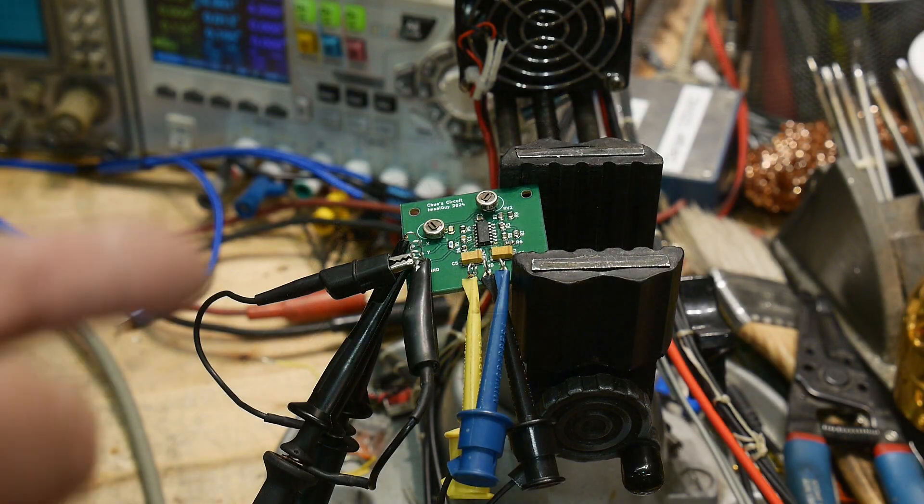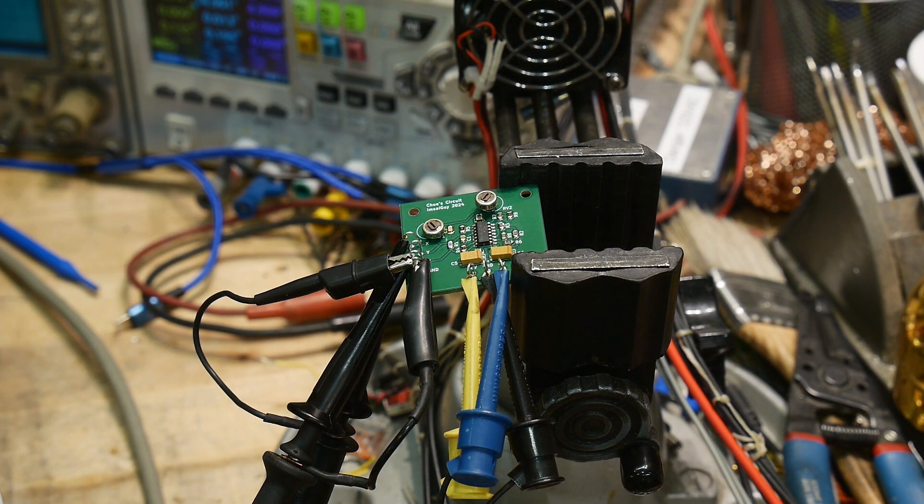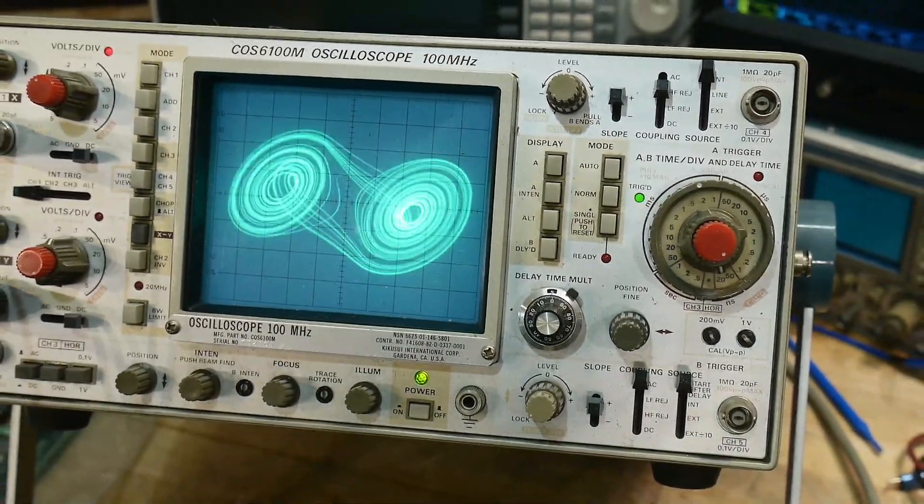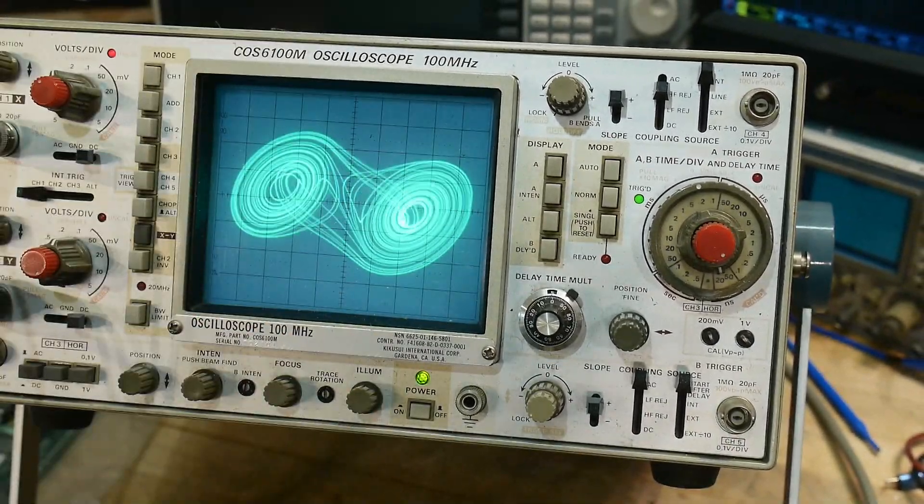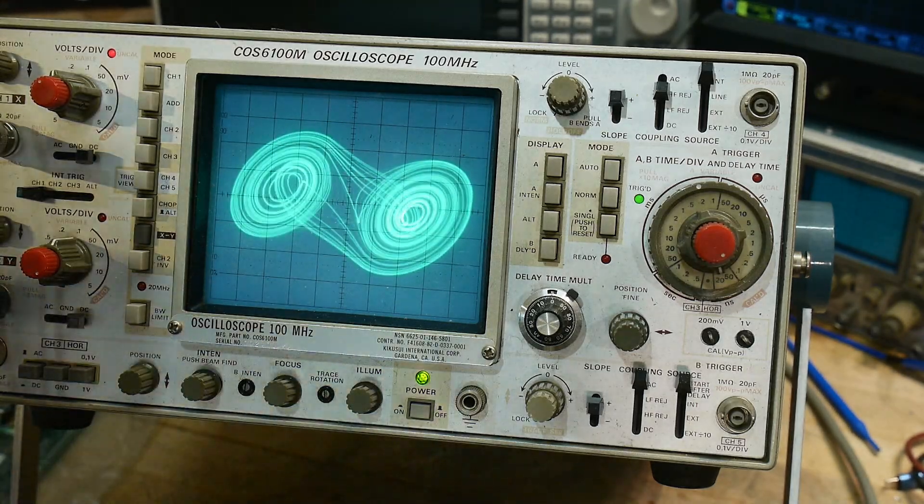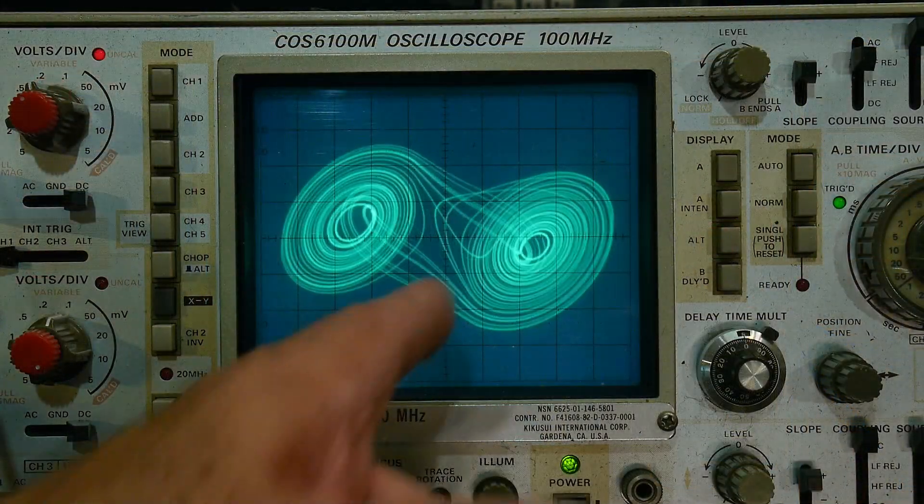All right, I have the oscilloscope probes hooked up. So let's take a look. Oh, lovely. I've pulled out my analog oscilloscope which gives a nice picture here. Let me rearrange things just a bit. All right, there we go. Lovely picture.